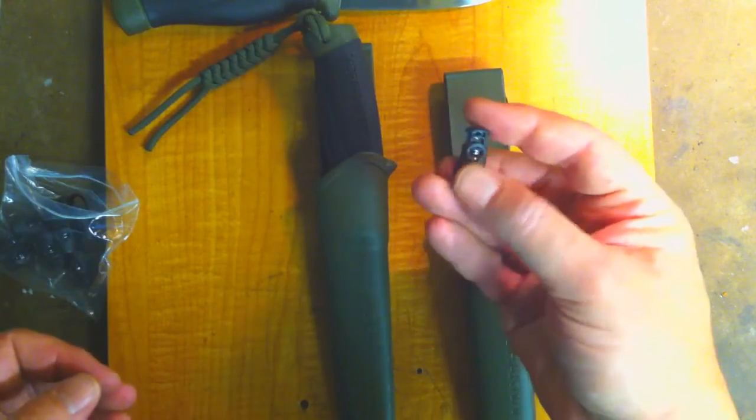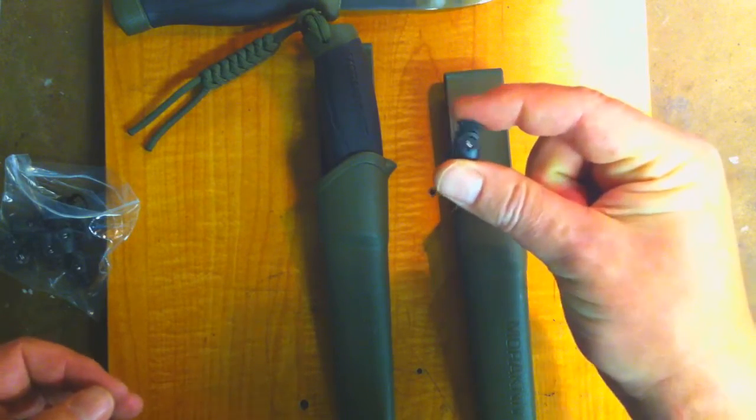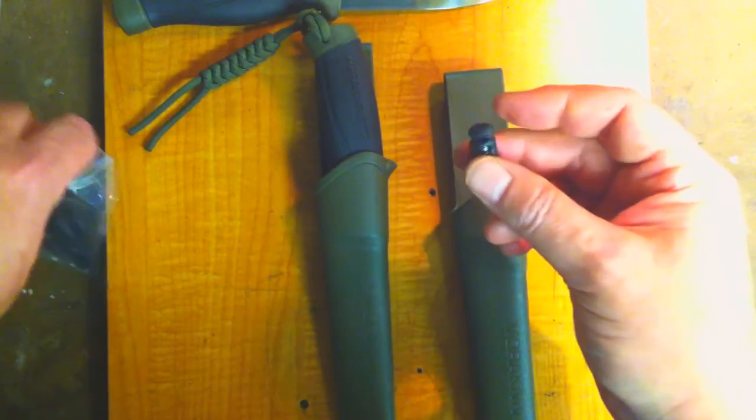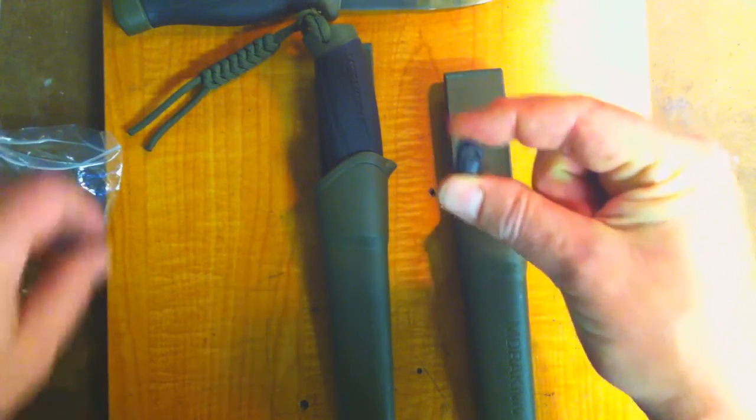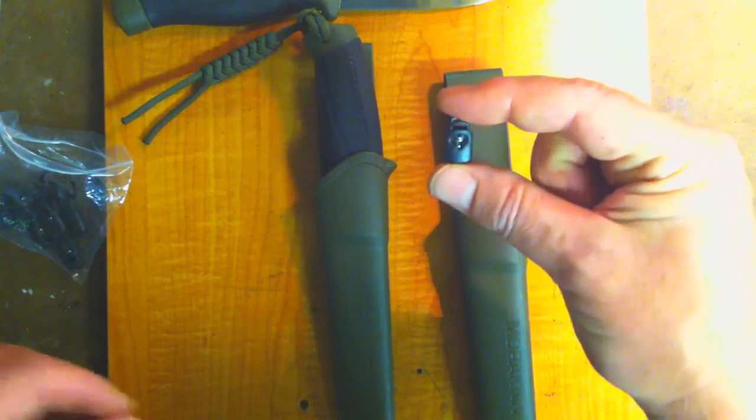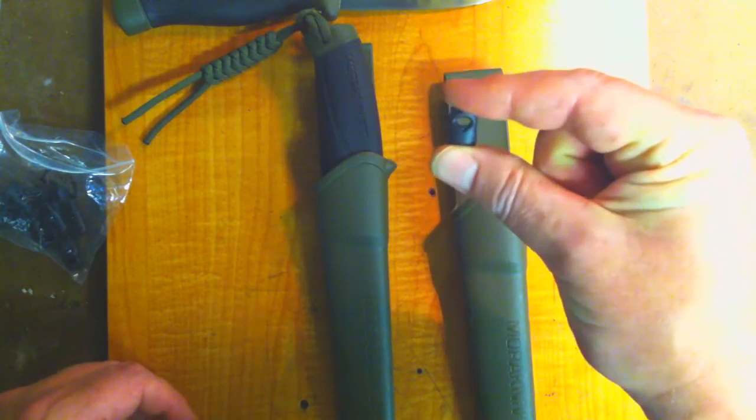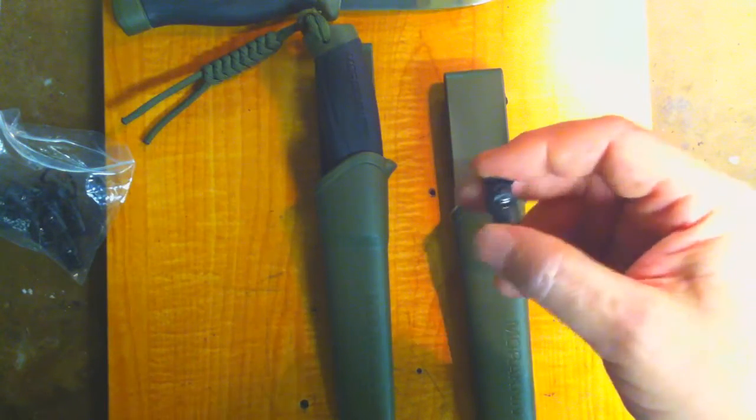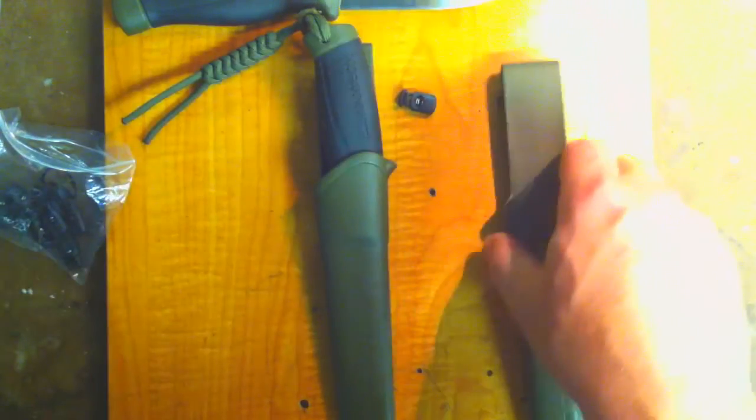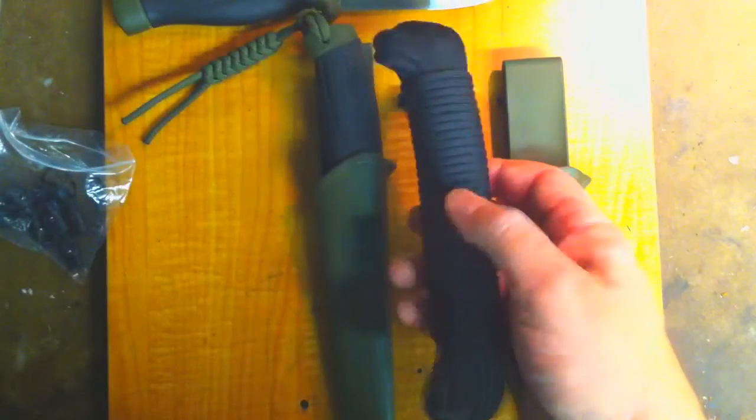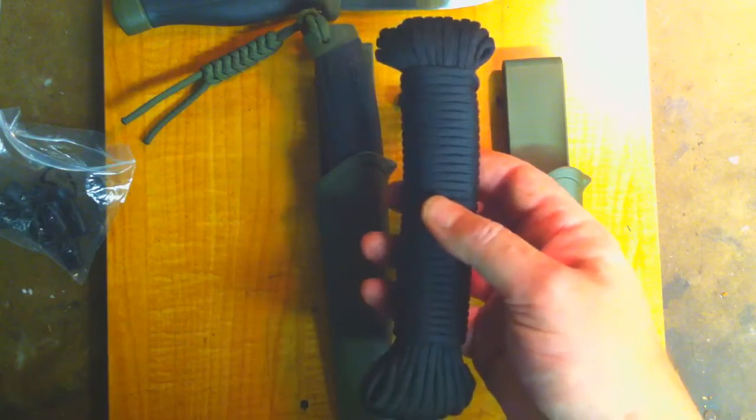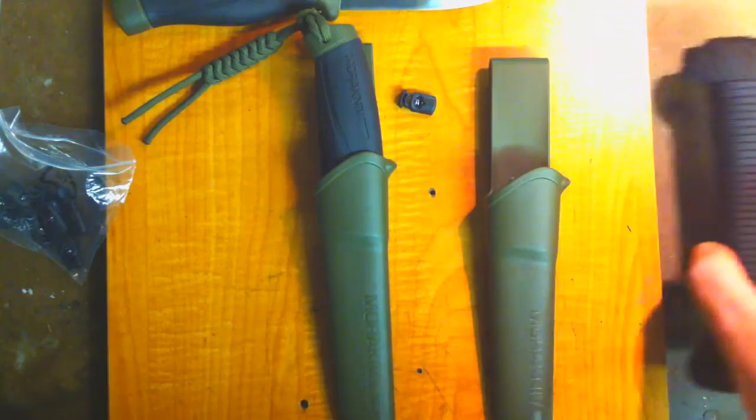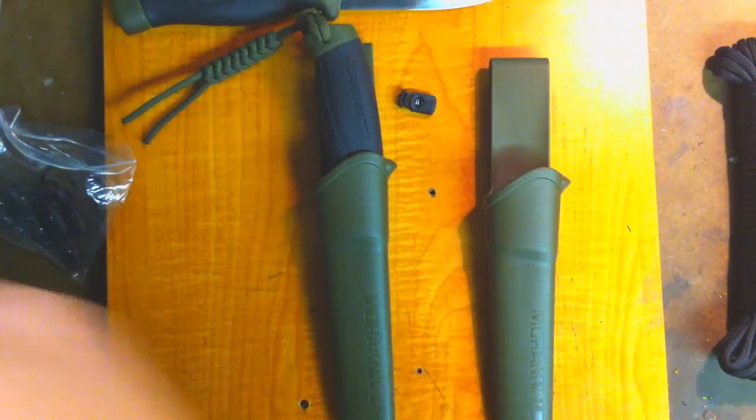So I messed around with this toggle a little bit and first thing I realized is that you cannot put two strands of 550 cord through this comfortably. So I went ahead and cut a piece of 550 cord. I got this black 550 cord. You could use whatever you want but I thought that the black would look better on this.